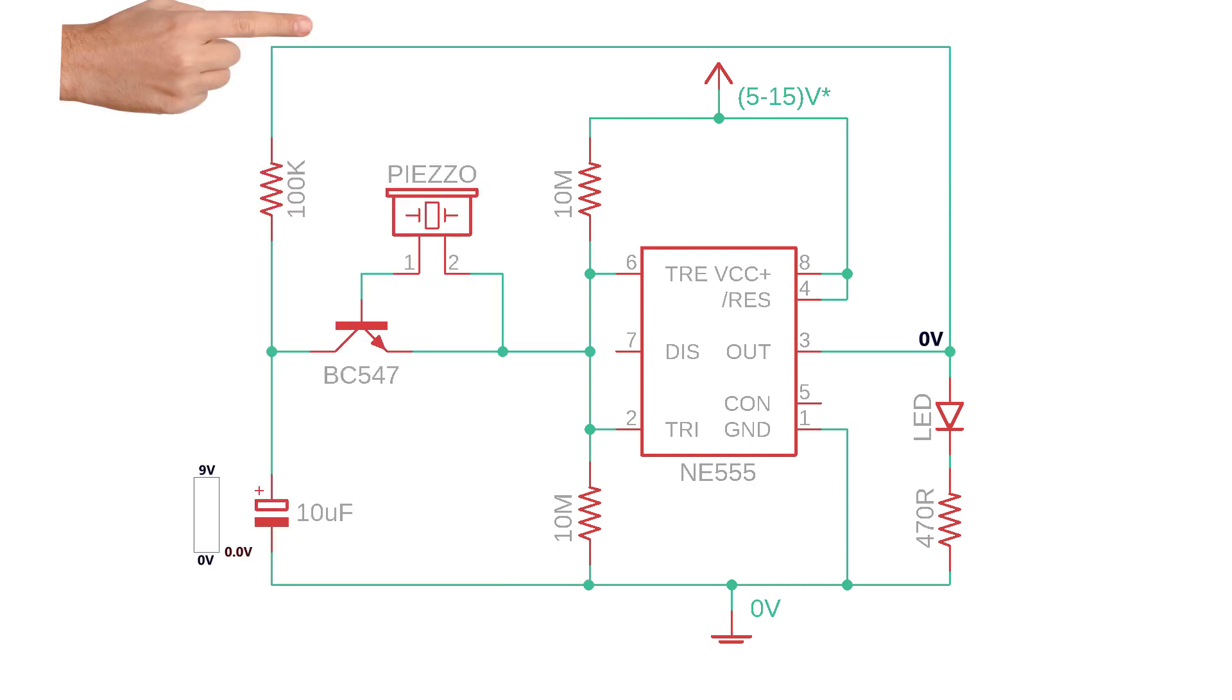Now considering the entire circuit when we tap on the Piezo buzzer tiny voltage spikes are generated between both its terminals which causes this transistor to conduct current between emitter and collector pins and so the output turns on as pin 2 detects voltage less than 1 thirds of supply voltage.